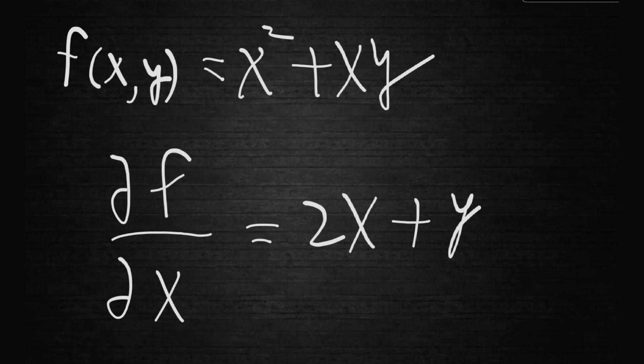And if we want to do f with respect to y, we'd have to treat x as the constant in which case we'd just get x because that's the coefficient in front of y. x squared is just going to be treated as a constant and we get our partial derivatives.